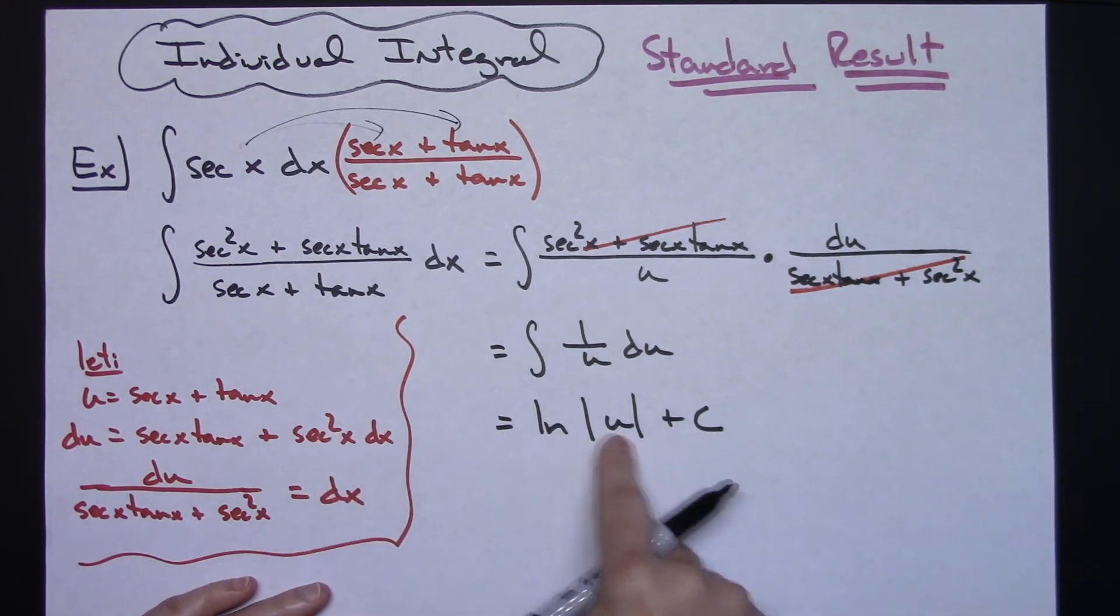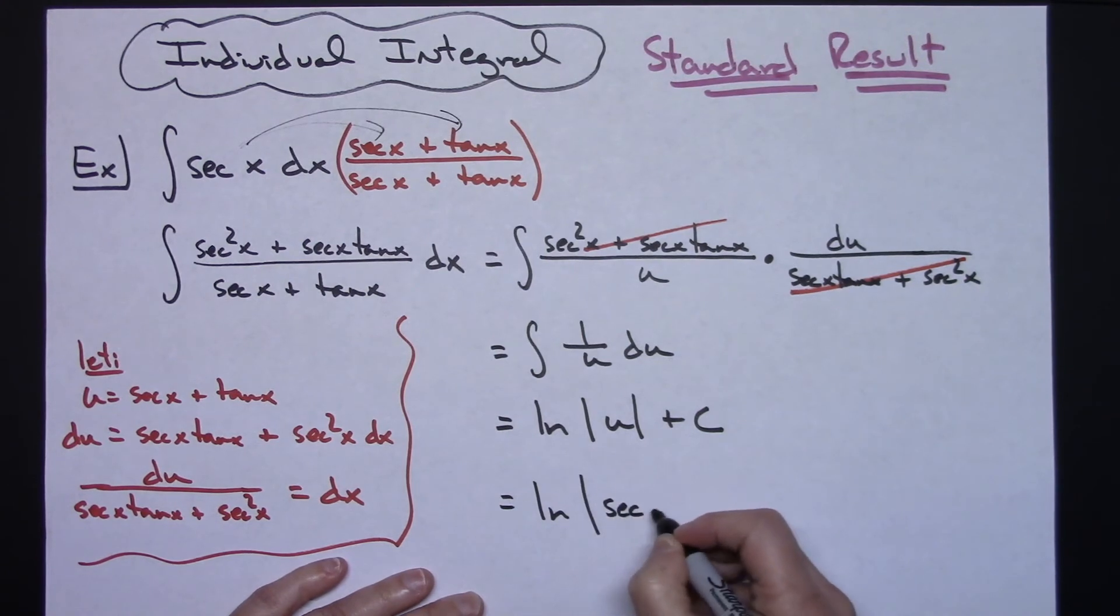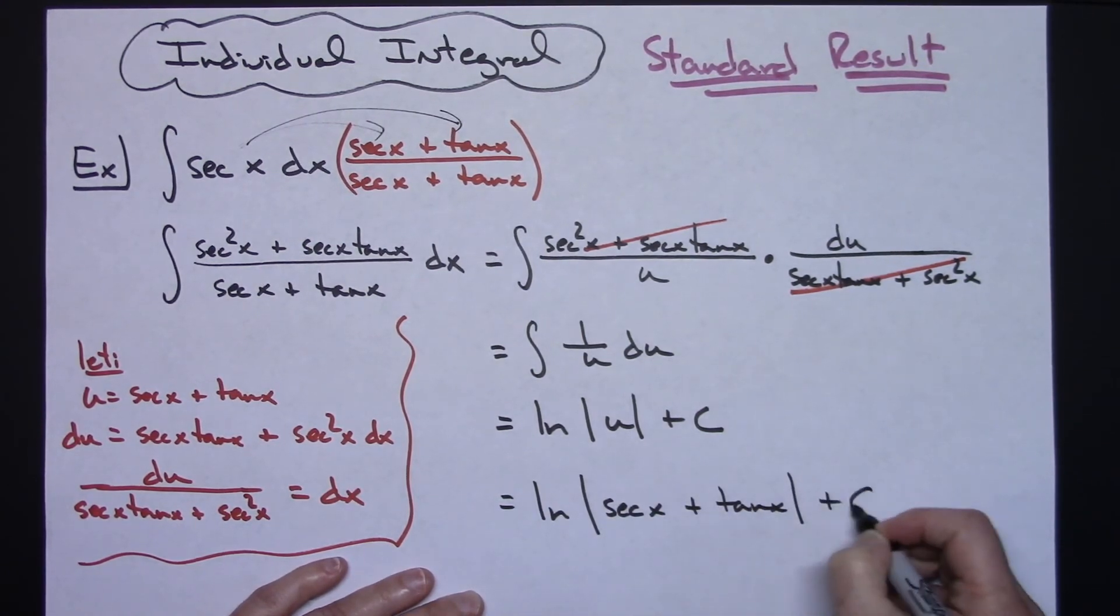And as a final step, replacing that u with what we said it was going to be, natural log absolute value secant x plus tangent x and then plus c.